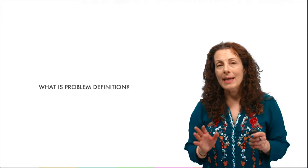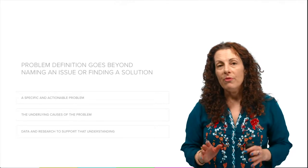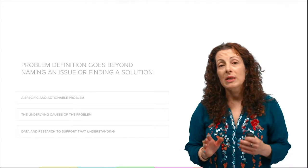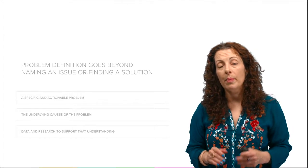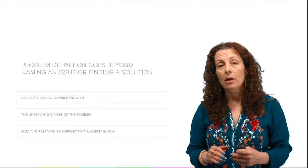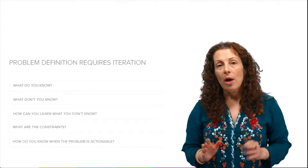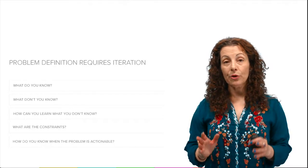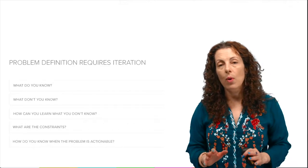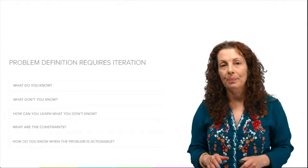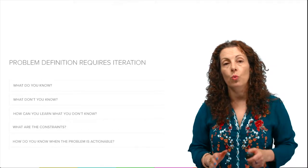So, what exactly do we mean by problem definition? Problem definition is the process of articulating a specific and actionable problem and identifying the root causes of that problem by using data, research, and collaboration. A sound problem definition — one that provides clear direction for a project — is a multi-stage process that always requires multiple drafts to arrive at. So let's work together to create a problem definition for your own work.